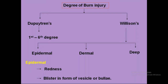By classification, burns are of two types: Dupuytren's classification and Wilson's classification. Dupuytren's classified burn injuries into six degrees — first through sixth. Wilson's classified burns into three types: epidermal burns, dermal burns, and deep burns. Both classifications are interrelated. We will discuss how Dupuytren's and Wilson's classifications relate to each other.